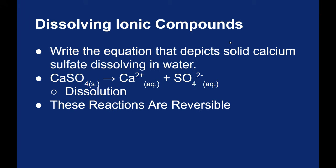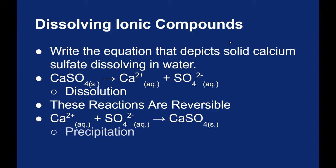We could reverse this reaction. We could take the calcium ions and the sulfate ions and make calcium sulfate. Now this may look familiar to you. This is a net ionic equation for a precipitation reaction. We've already defined that when we have aqueous ions forming a solid, we call that a precipitate.